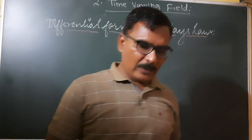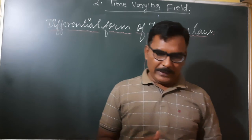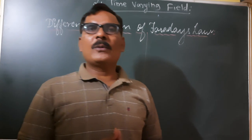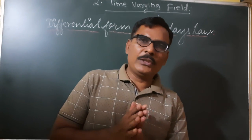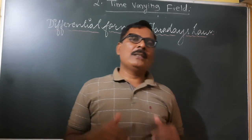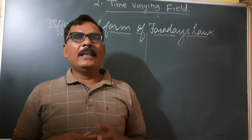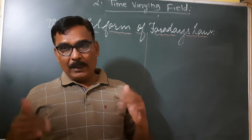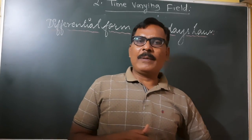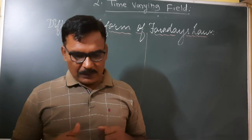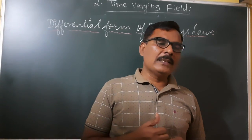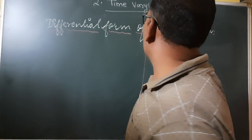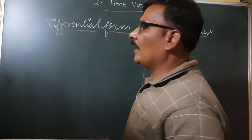Good morning. In the last period we started chapter number two, that is Time Varying Electric Field. In that we have to study Faraday's law of electromagnetic induction. First law: whenever there is a change in magnetic flux associated in the coil, there is an EMF induced in that coil. Secondly, E is directly proportional to d-phi by dt. By Lenz's law, E equals minus d-phi by dt. After that we are going to discuss the integral and differential form of Faraday's law.